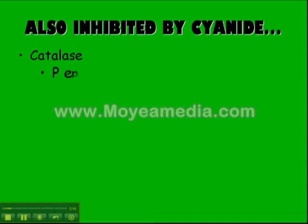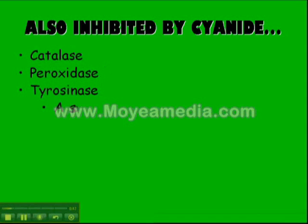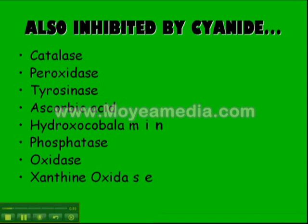Also inhibited by cyanide includes catalase, peroxidase, tyrosinase, ascorbic acid, and many more.